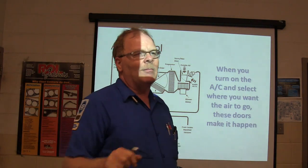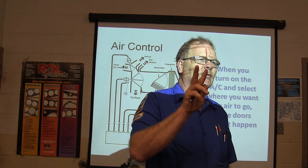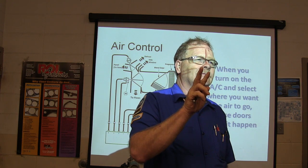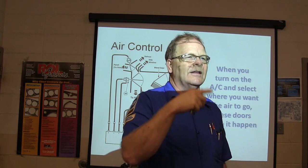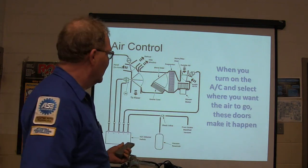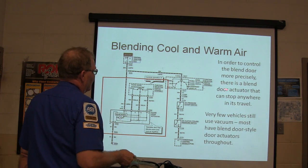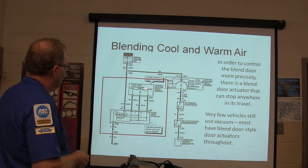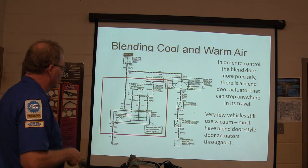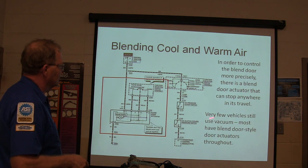Will you get better gas mileage running your AC on max or norm? If you're driving to Atlanta and it's 100 degrees, use max — because you're recirculating the air so the compressor doesn't have to run as much. On norm you're pulling in hot outside air and doing a lot more work. To control the blend door more precisely, there's a blend door actuator that can stop anywhere in its travel. Many vehicles use an electronic blend door actuator with a potentiometer even if they have no other electronics.